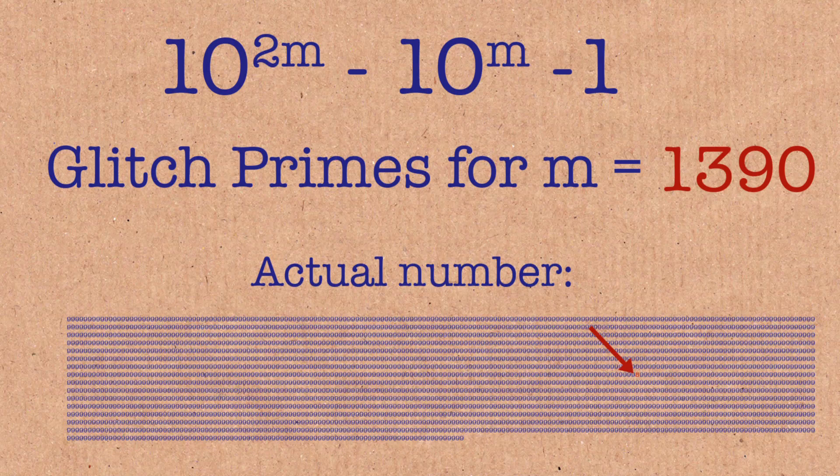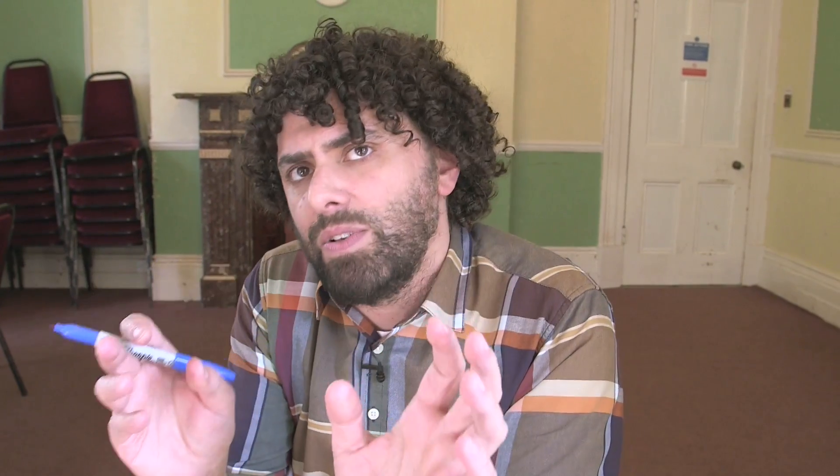That's as far as the database went, and probably as far as we know at this point for this particular form. Think about how big this number is, how many possible values of m there are — and it's only for those specific values that this will be prime.